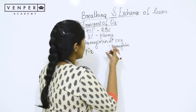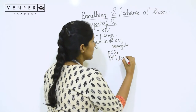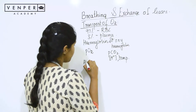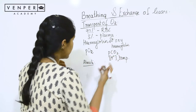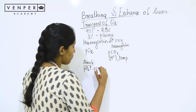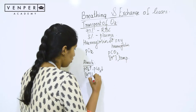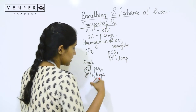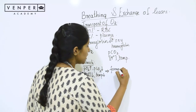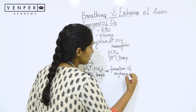Other factors that can affect this are the partial pressure of carbon dioxide, the concentration of H⁺ ions, and temperature. In the alveoli, the partial pressure of oxygen is high, partial pressure of carbon dioxide is low, the concentration of hydrogen ions is low, and the temperature is lower. In this situation, the formation of oxyhemoglobin is favoured.